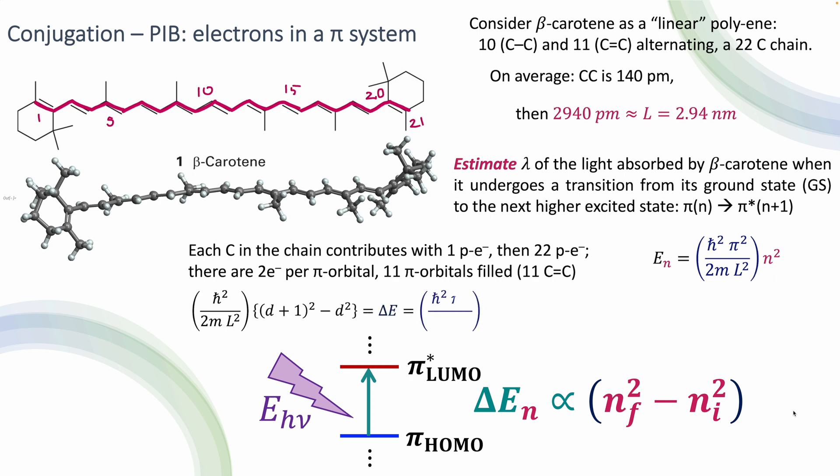The only thing that we have to do is to put the right or the correct constants. Now, again, in terms of the number of double bonds, the transition energy is going to be given by this bunch of constants times 2 times the number of double bonds plus 1, and remember that we can calculate this length of the box according to the average carbon-carbon bonding. So LUMO, in this case, is going to be 12, which is d plus 1.